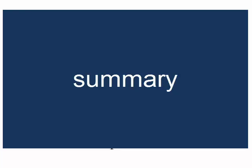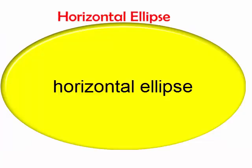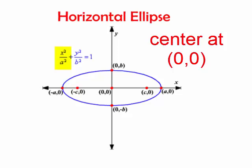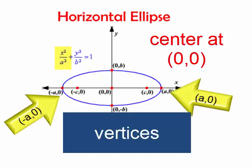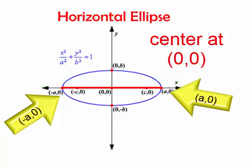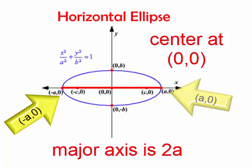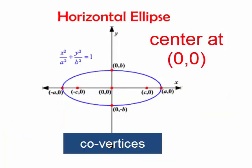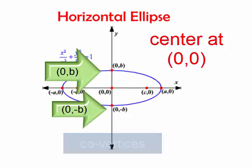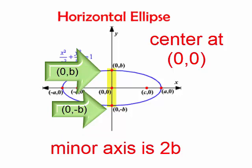So to sum it up, if I have a horizontal ellipse, the larger denominator is under the x² term which means my vertices are at (a, 0) and (-a, 0). Also notice that my foci are on the x-axis. And of course, my major axis is horizontal and the length of it is 2 times a. My co-vertices are on the y-axis and they would be (0, b) and (0, -b). And the length of my minor axis would be 2 times b.